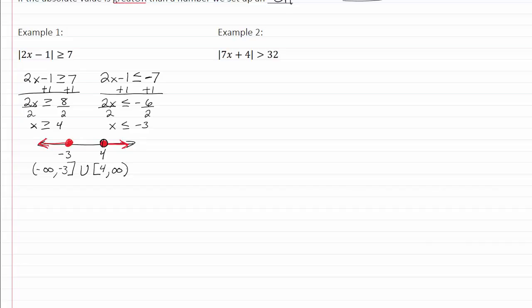Let's look at example two. Again, we set up our one equation exactly like it is. We set up our second equation, because we're going to multiply by a negative, we're going to flip the inequality and so it'll be less than negative 32.